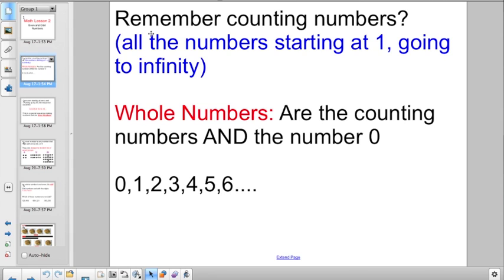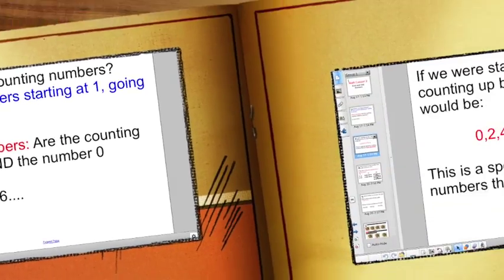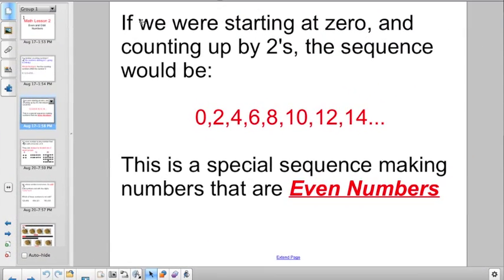I'm going to start off with a little bit of review. Do you remember the counting numbers? All the numbers starting at one, because when we start counting we start with one and go on to infinity. The whole numbers are the counting numbers and the number zero, so you'd end up with zero, one, two, three, and so on all the way to infinity.